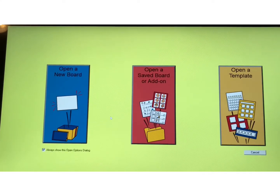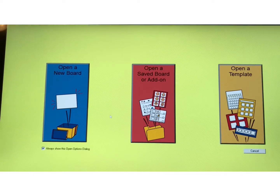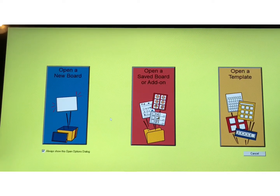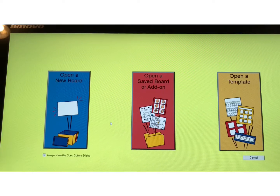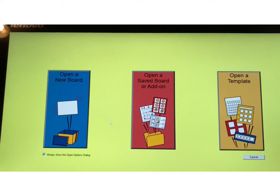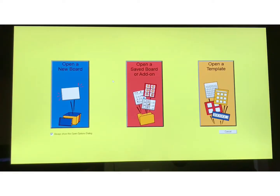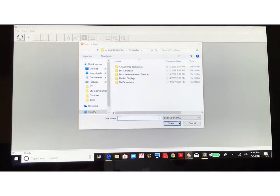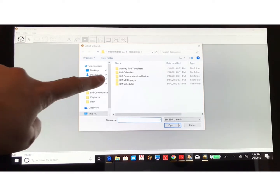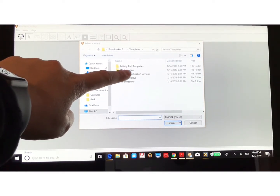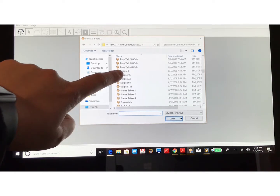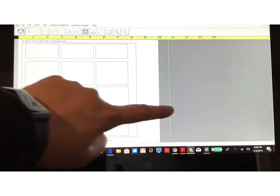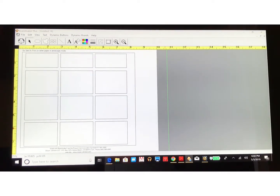I'm going to show you how to develop an overlay for the GoTalk system. The Attainment Company does have their own software system for developing overlays, however I'm using Boardmaker. There are lots of different templates available on the Boardmaker software for a variety of communication devices, the GoTalk being one of them. When you open Boardmaker, you push open a template, click on communication devices, and scroll until you find the GoTalk systems. I found the 9+, clicked open, and the template appears on screen.